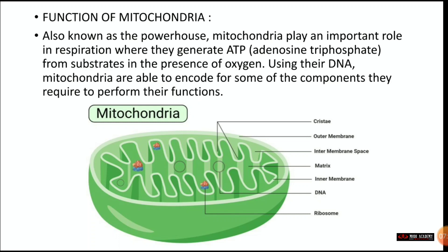Looking at the mitochondria structure: the folded inner parts are called cristae, the outer layer is the outer membrane, and the space between is the inter-membrane space. The matrix is the region inside the inner folds. DNA substance is present between the cristae and matrix, and the round bodies present are ribosomes. Mitochondria is an important part of the cell.